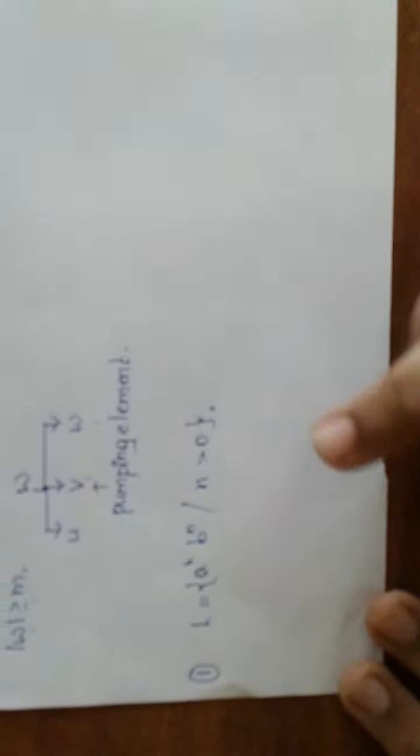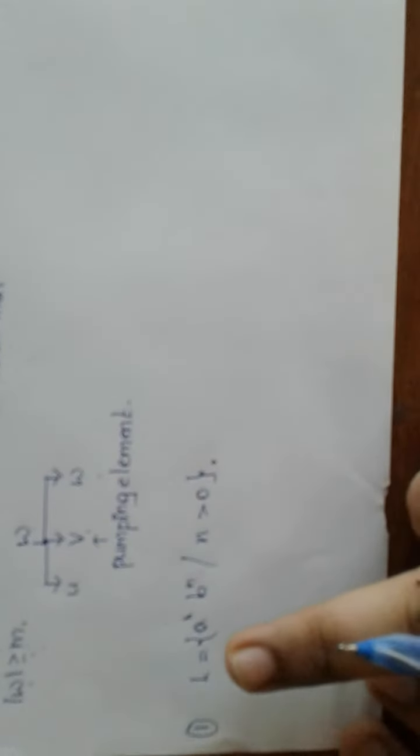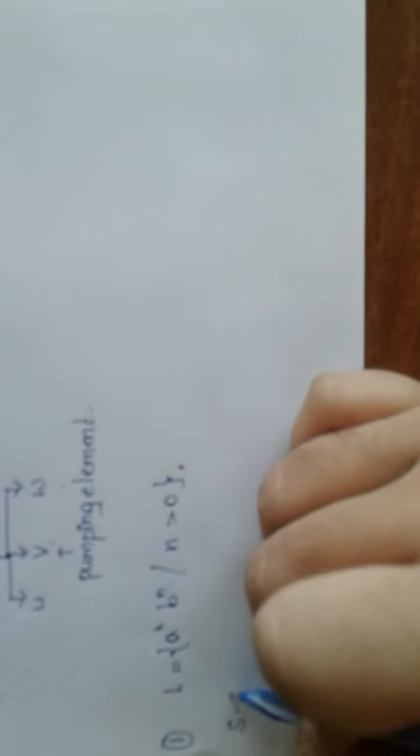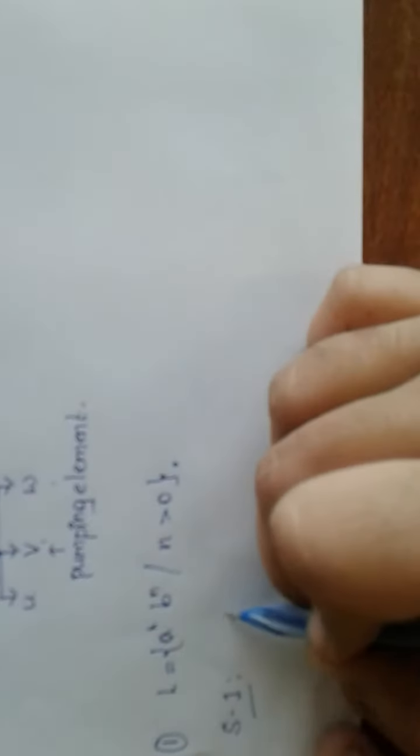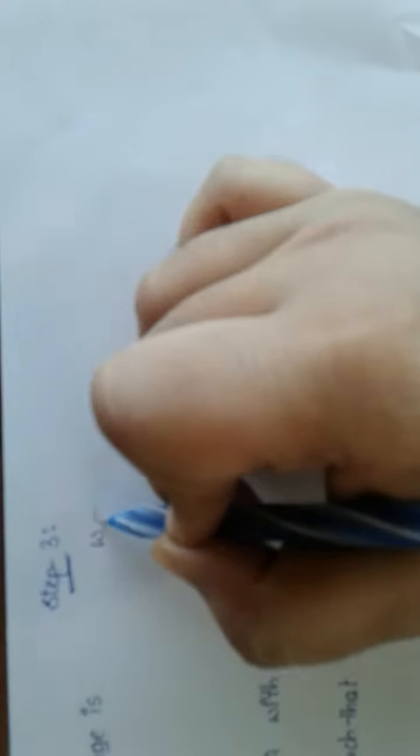So let us now assume that we have a language L = A^N B^N such that N is greater than or equal to 0. For this given language we need to check whether L is regular or irregular. As per step 1, we will assume that our L is regular. As per step 2, since L is regular, there exists a DFA with M states.